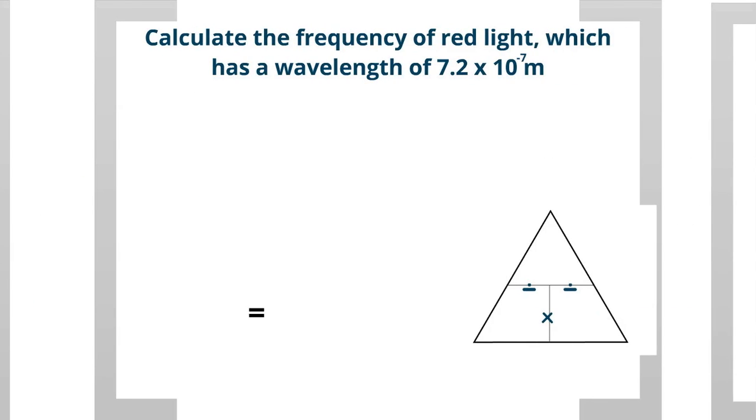And we can use that equation to solve a problem like this. Calculate the frequency of red light, which has a wavelength of 7.2 times 10 to the negative 7th meters. Well, let's look at our knowns, which is the wavelength is given to us in the problem, lambda, 7.2 times 10 to the negative 7 meters.